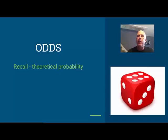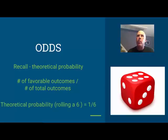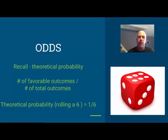First, let's do a recap of probability. We know that theoretical probability is a comparison — a ratio between two things. It's the number of favorable outcomes over the number of total outcomes. Using our die as an example, the theoretical probability of rolling a six is one sixth, because there's one side with the number six on it and there are six total sides.